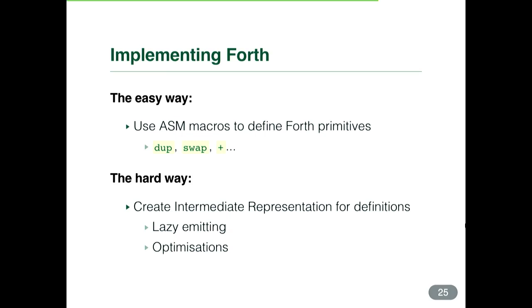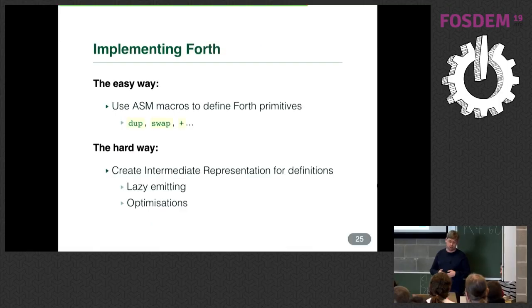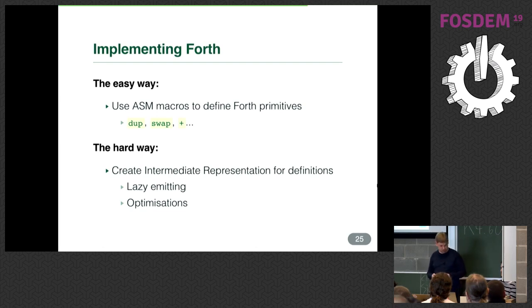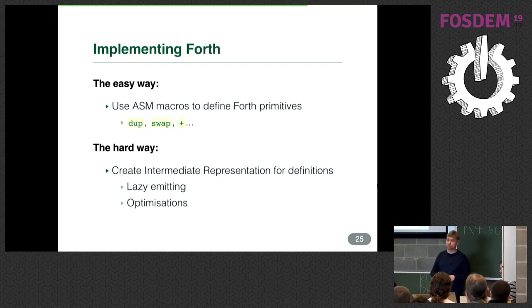The intermediate representation is more complex because you're not directly emitting assembly anymore, but it allows things like lazy emitting: you can create a million definitions and if you don't use them in your main code, they won't be emitted to the ROM — quite useful given the 32 kilobyte limit. It also enables optimizations; we worked on tail call optimization, and there are many other things you can do with an IR.